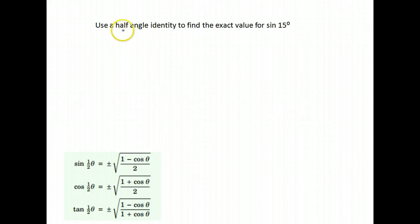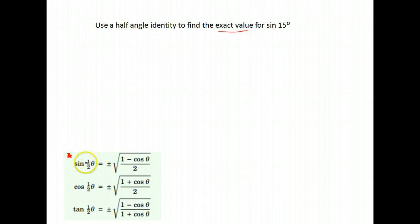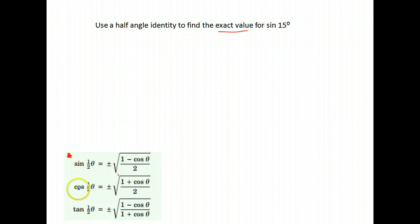Let's talk about using the half-angle identity to find the exact value of the sine or the cosine of an angle. We're going to be using the half-angle identities. For sine, the sine of half of an angle is equal to plus or minus the square root of 1 minus cosine theta over 2. For cosine, we use this one, and for tangent, this one here.